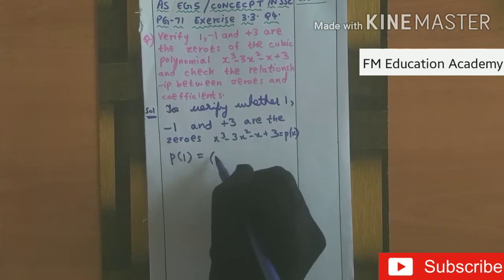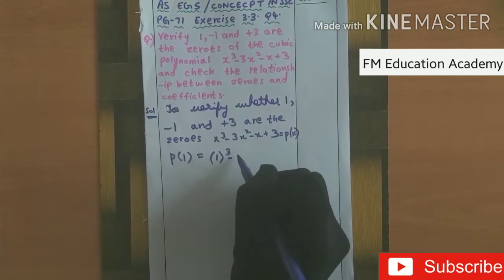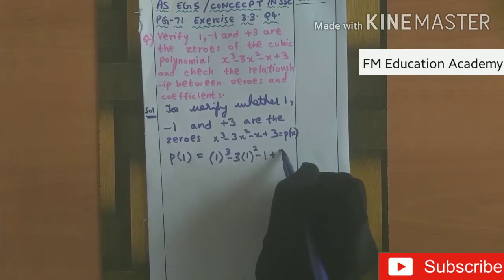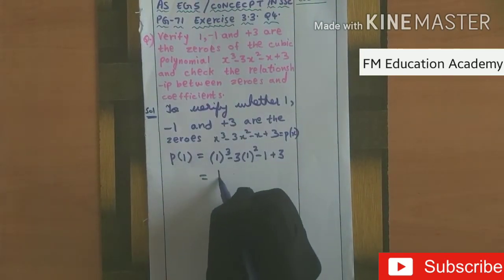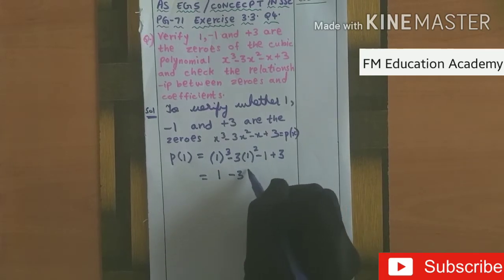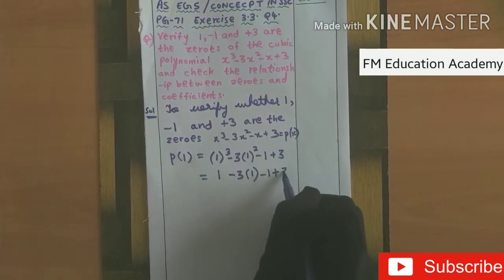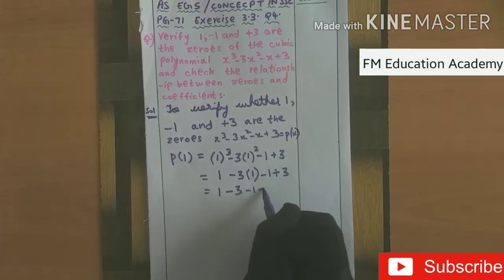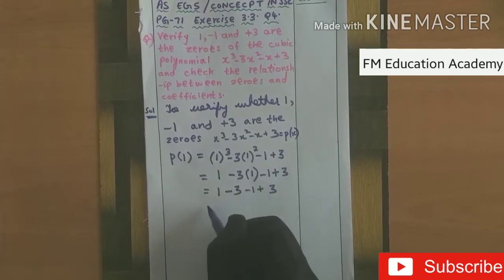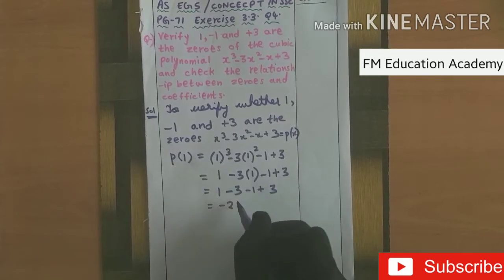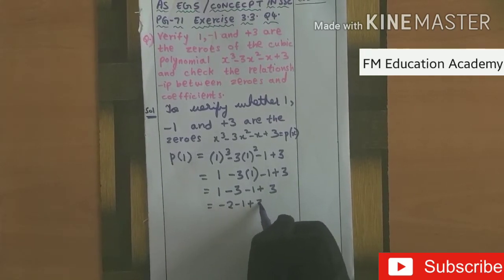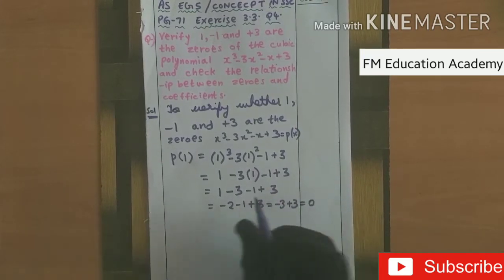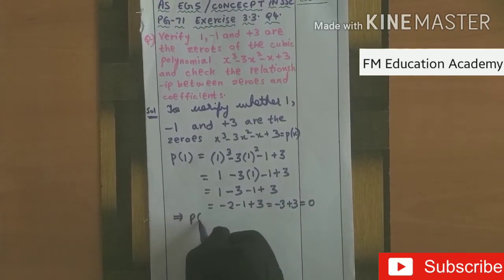So p(1) equals 1³ minus 3 times 1² minus 1 plus 3. That is 1 minus 3 times 1 minus 1 plus 3, which equals 1 minus 3 minus 1 plus 3. Minus 2 minus 1 is minus 3, and minus 3 plus 3 is 0. So p(1) equals 0.